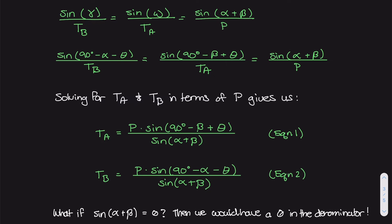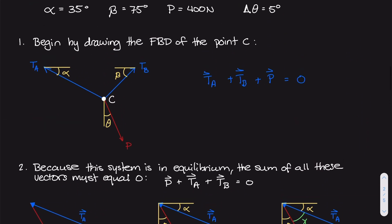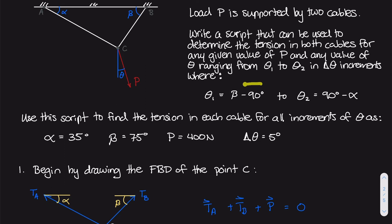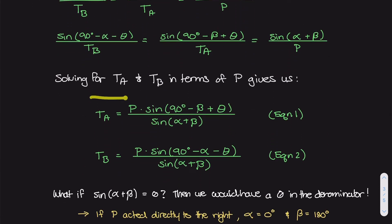These are equations one and two, and they give us the tension in both cables in terms of theta. Since theta ranges from theta one to theta two incrementing by five degrees, for every increment of theta we use these equations to calculate what TA and TB are.